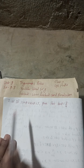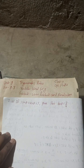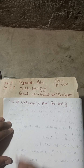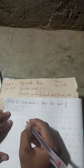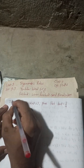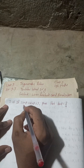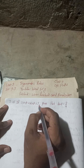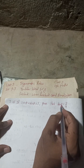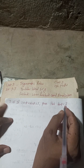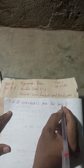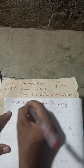So if you find this video useful, keep watching, keep supporting. Let's begin the solution of 7A. If 3 sin θ plus 4 cos θ is equal to 5, prove that tan θ is equal to 3 by 4.